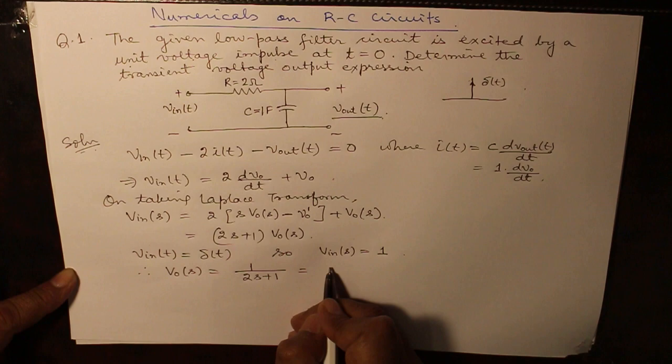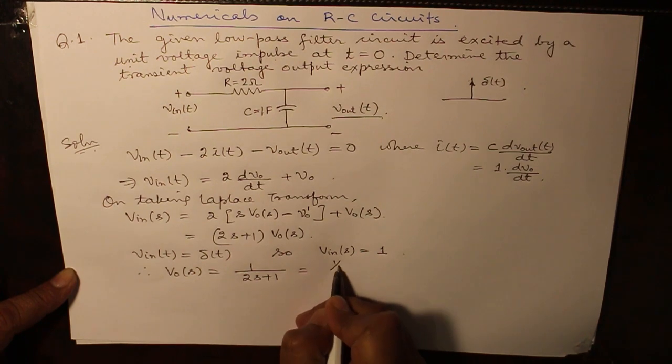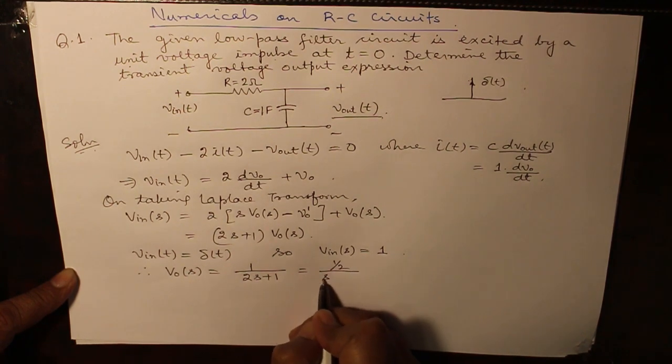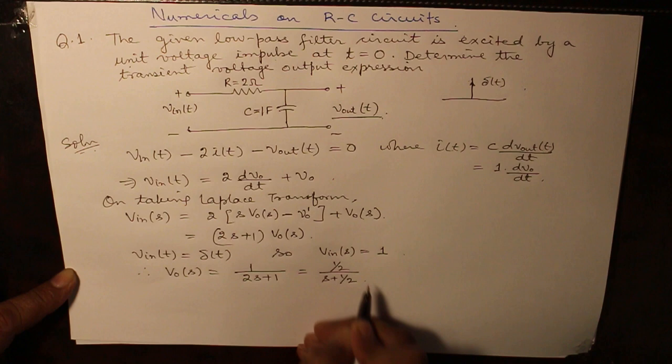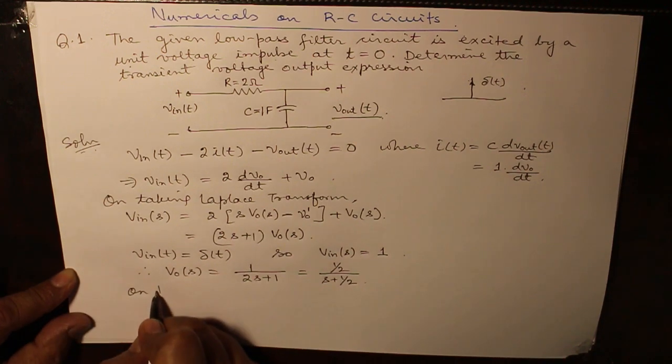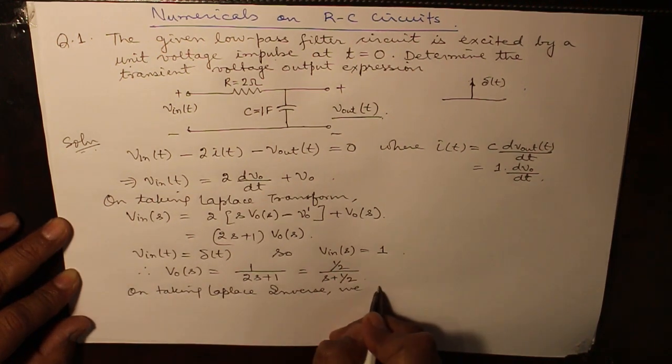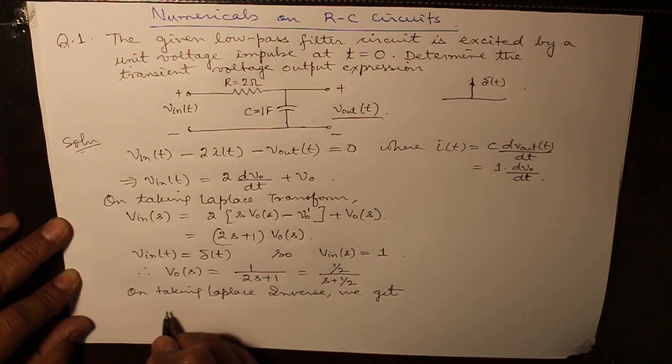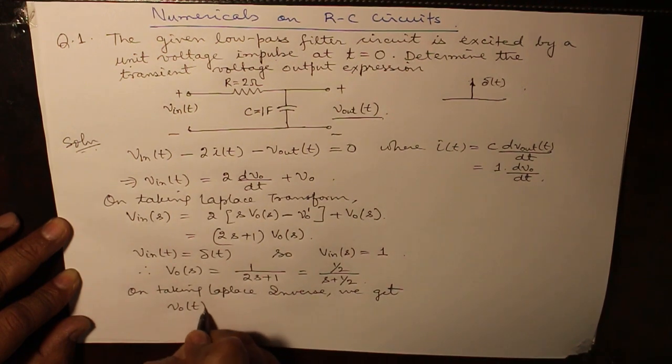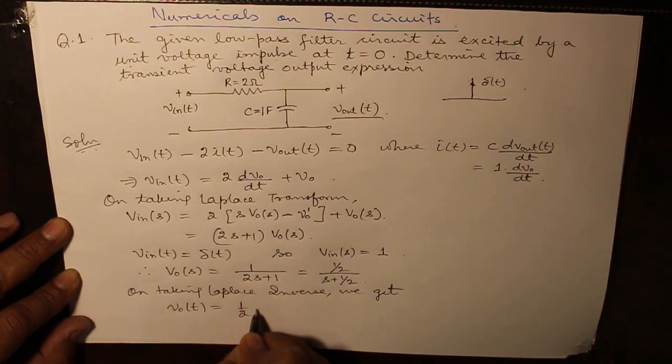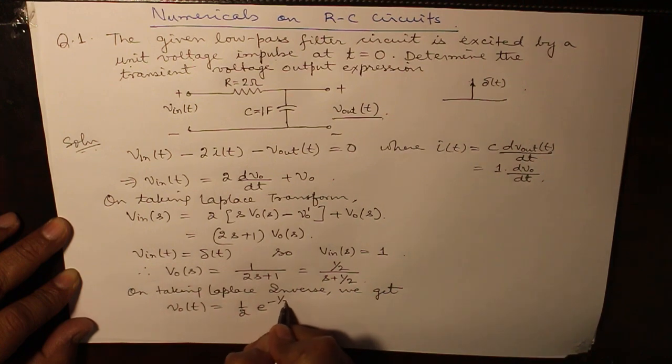Taking out 2 common and bringing it in the numerator, on taking Laplace inverse, we get V_0(t) as half e raised to the power minus half t.